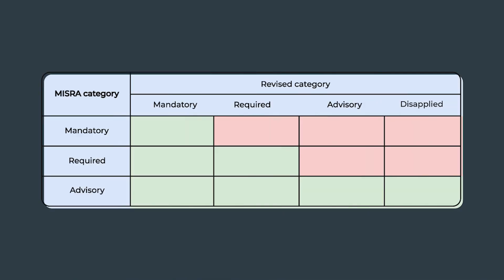Here is how the GCP looks as a table. From the table we can see what advisory rules may not be checked for compliance, what advisory rules can be recategorized as required or mandatory, and what required rules can be recategorized as mandatory. For example, the 1.1 rule at the required level can be raised to mandatory or left as is — shown with green cells. Lowering the level to advisory or disapplied is not allowed, shown with red cells.